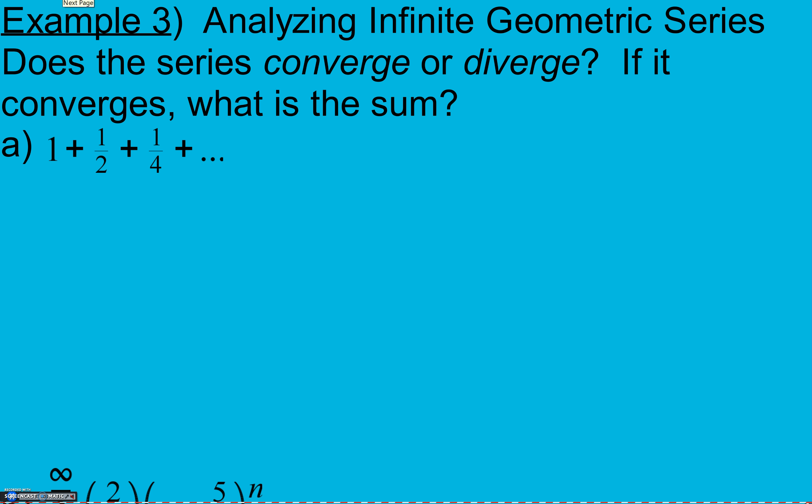Example 3 is analyzing infinite geometric series. Does a series converge or diverge? If it converges, what is the sum? So first thing we need to do here is figure out our common ratio. From 1 to a half means we multiplied by a half. Half to a fourth, we multiplied by a half. So our ratio is one half.